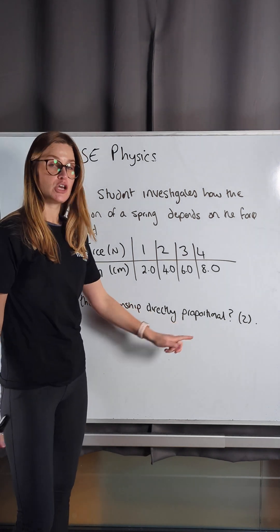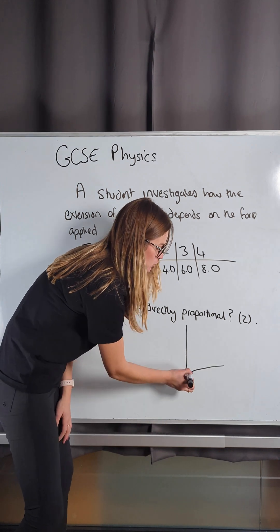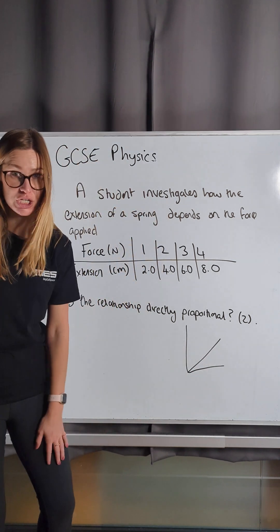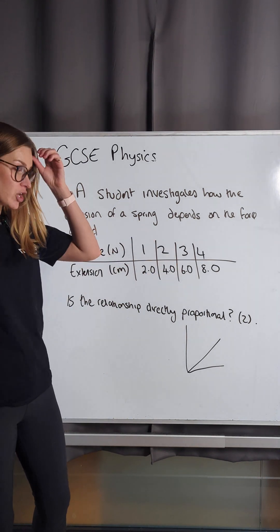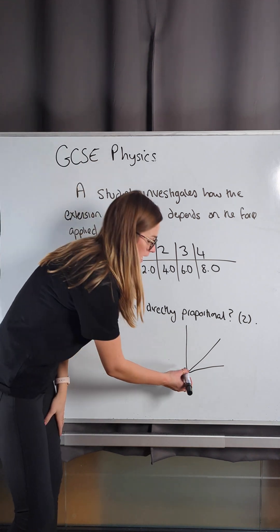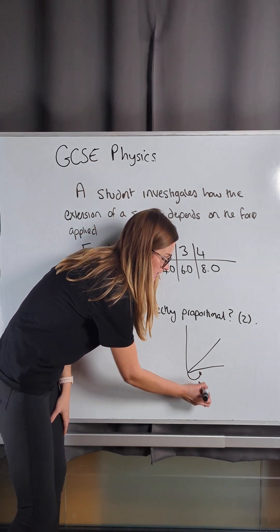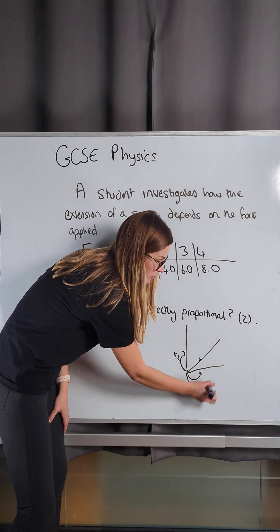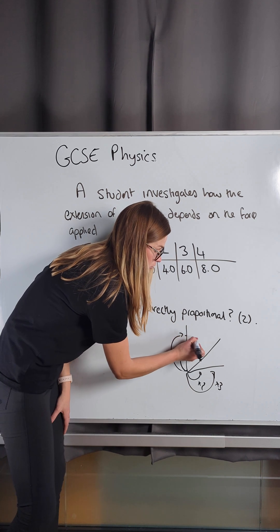Do you remember what directly proportional is? You're probably very used to directly proportional just meaning that it's a straight-line graph that passes through the origin. But we don't have a graph here, we have data. What it means is, if one of the numbers gets doubled, the other number gets doubled also. If one of the numbers gets tripled, the other number gets tripled also.